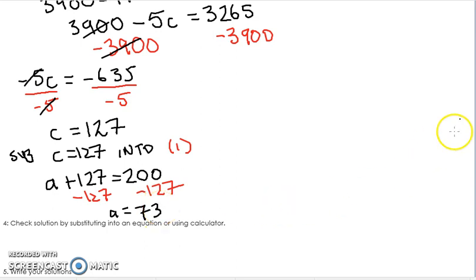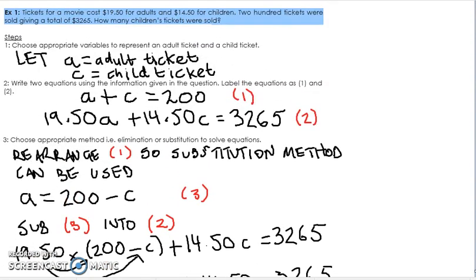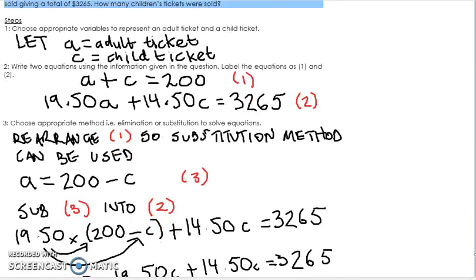So we can go ahead and check if we want to. Check the solution by substituting into an equation or using a calculator. Well, I know that 73 plus 127 will give me 200. And when I do substitute it into equation 2 as well, the amount of tickets for A, the amount of tickets for C, or for adult and for children respectively, times it by their cost, I will get 3265 and you can go ahead and check that yourself to make sure that that does work.